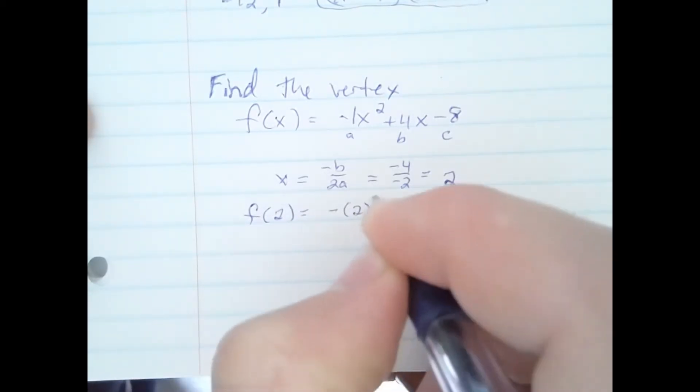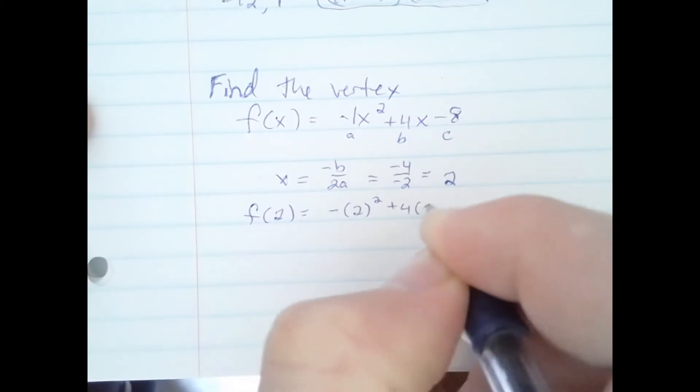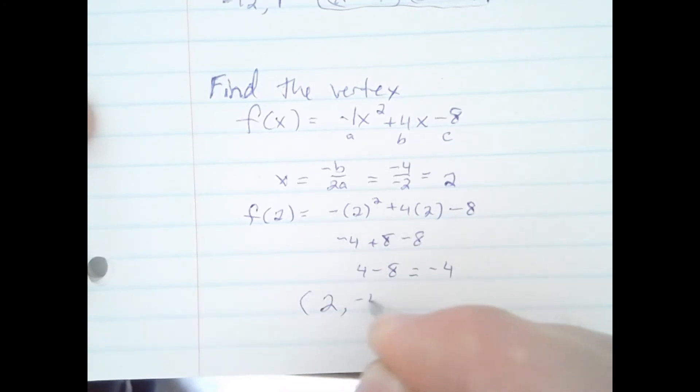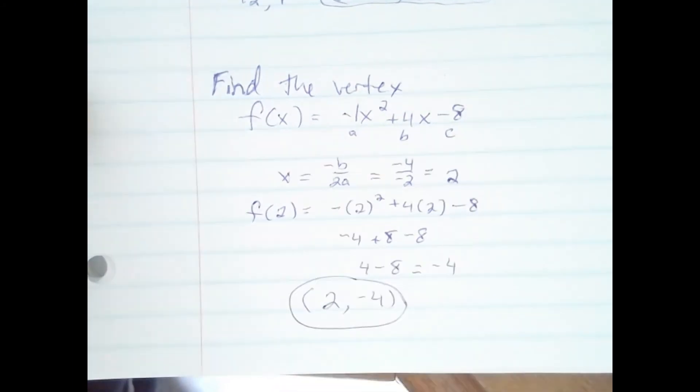Negative 2 squared plus 4 times 2 minus 8. That gives us negative 4 plus 8 minus 8. Negative 4 plus 8 is 4, and 4 minus 8 equals negative 4. Our vertex then is 2 comma negative 4. We'll see you next time.